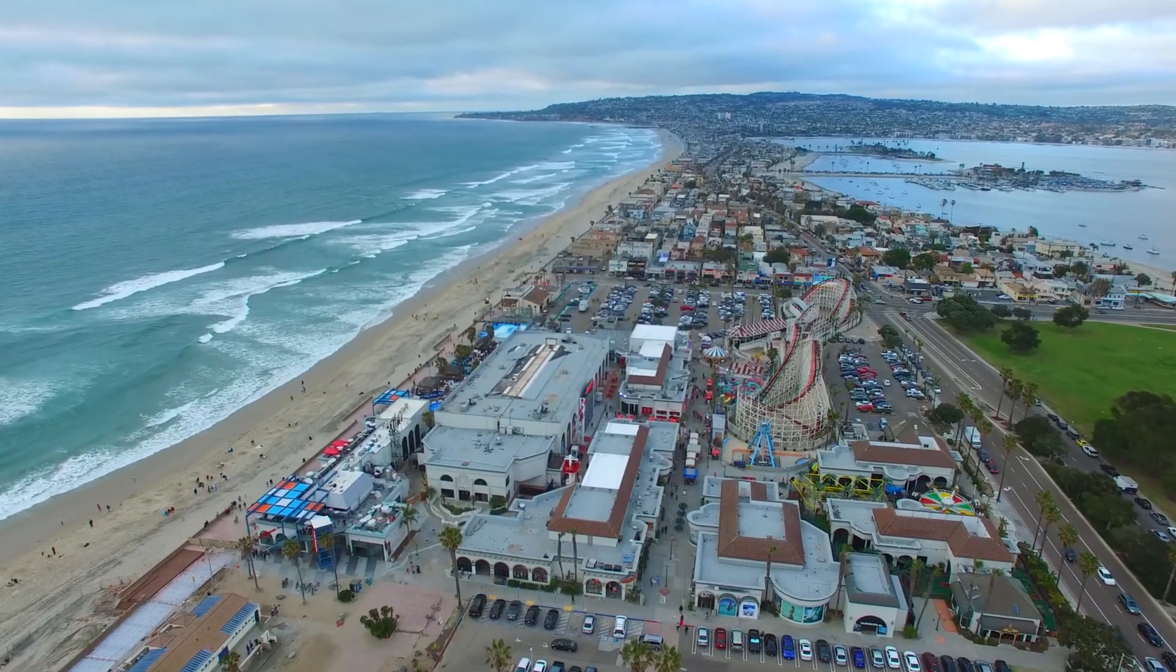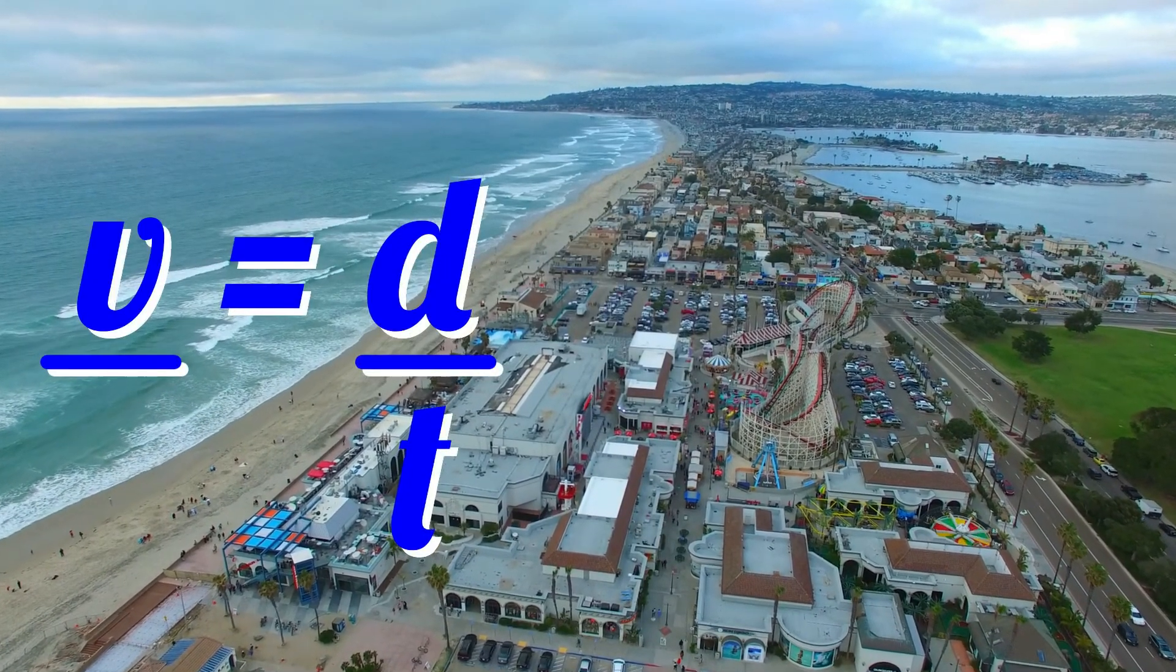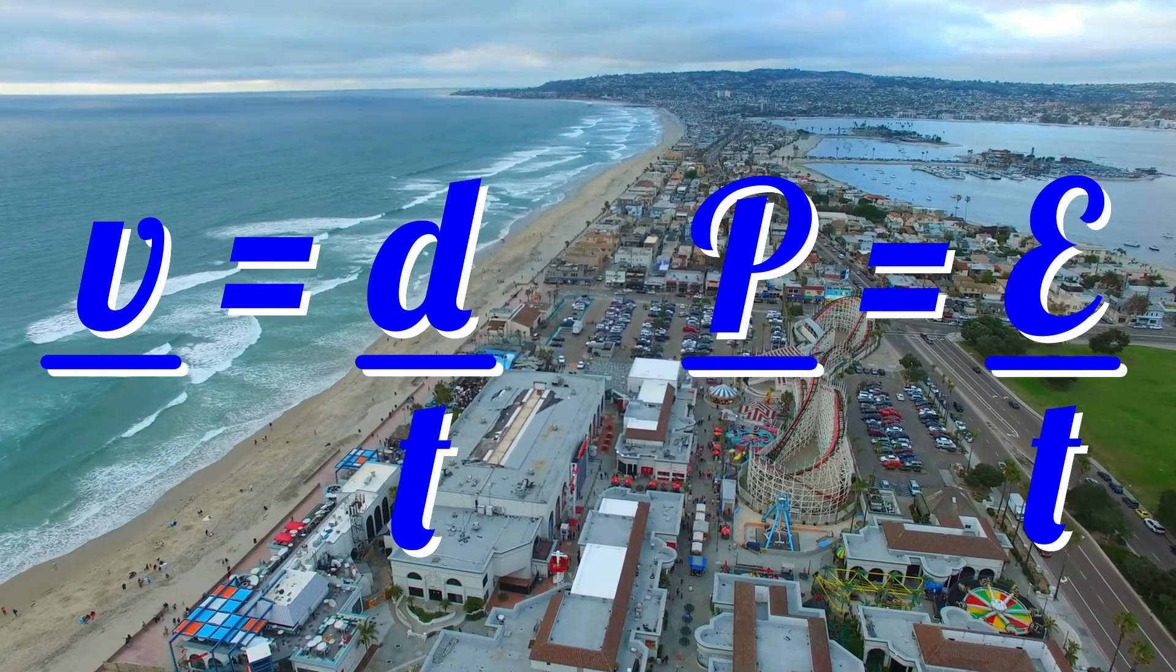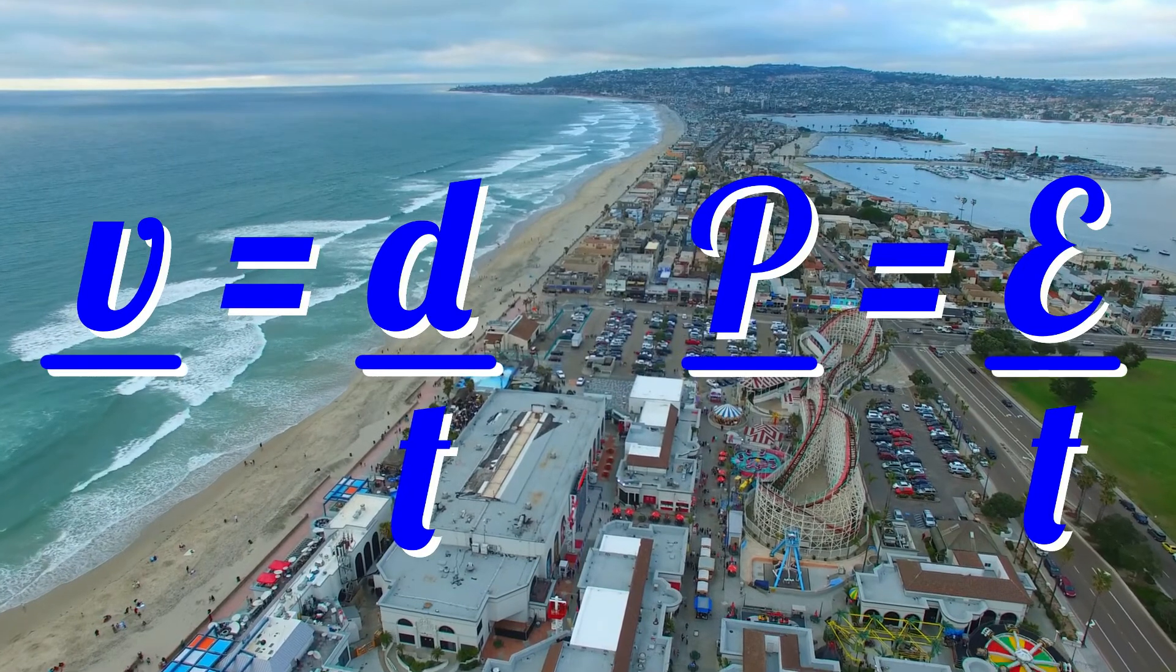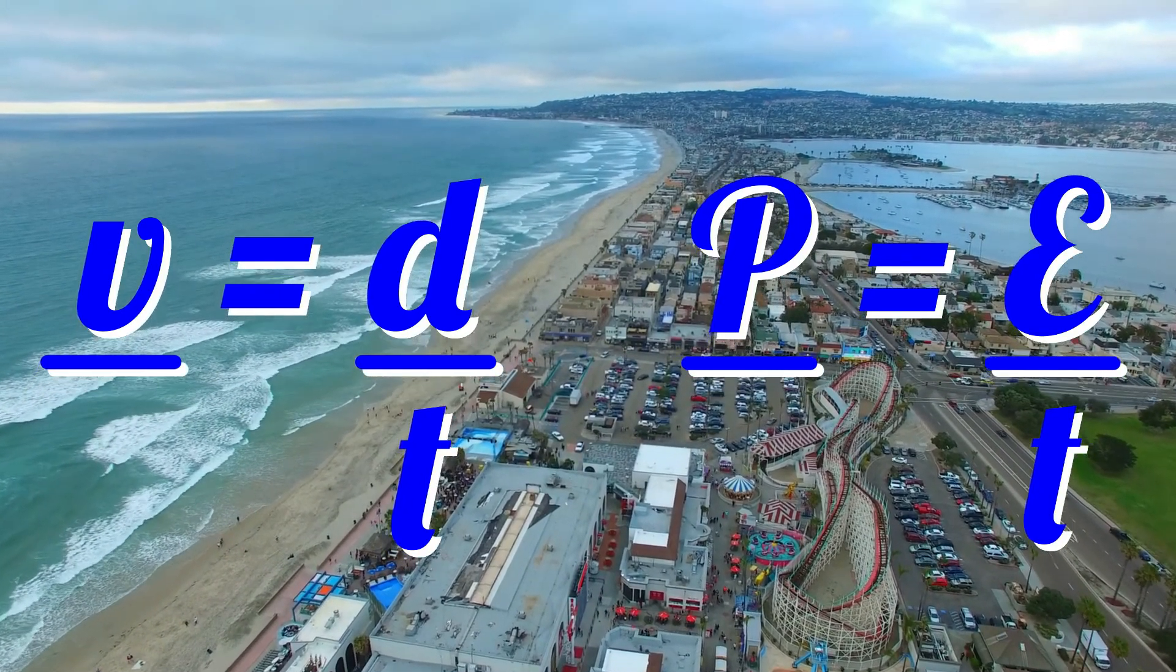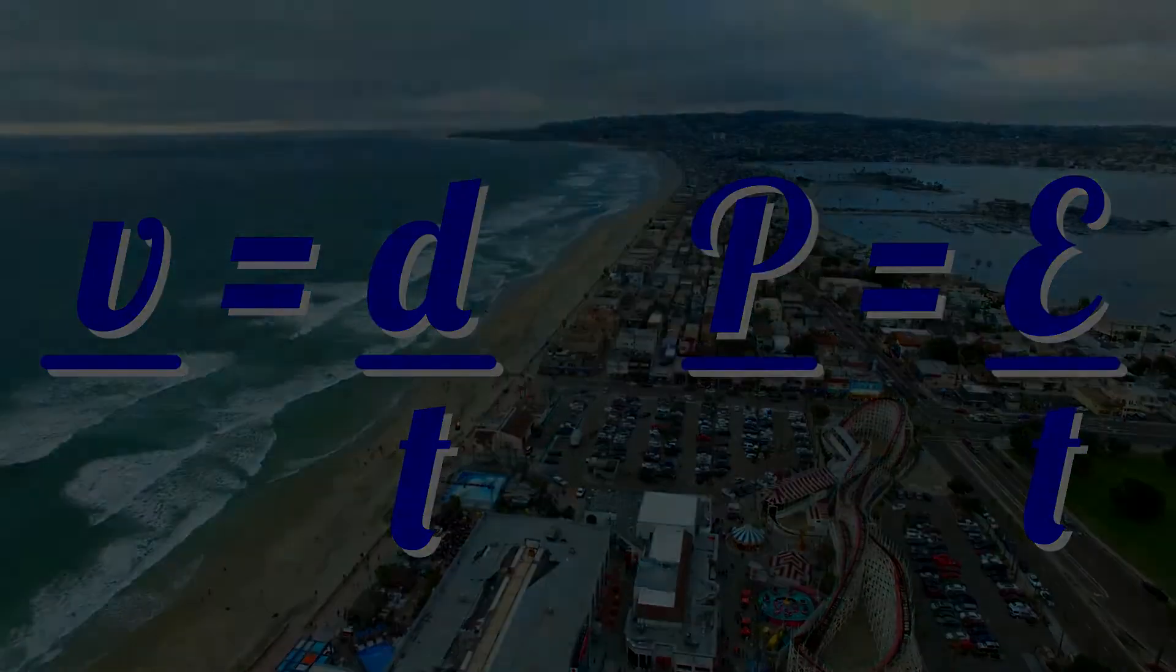This lesson's equations were V equals D over T and P equals E over T. Please re-watch this video as many times as you need to make sure you succeed in your physics GCSE and IGCSE.